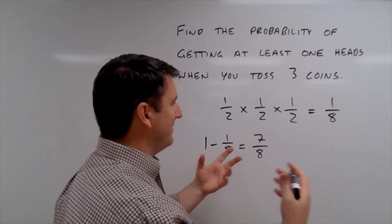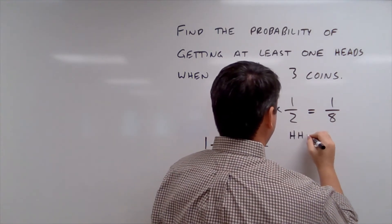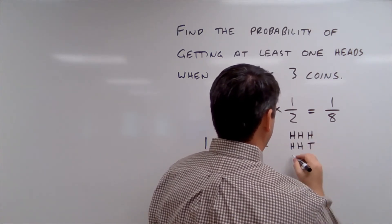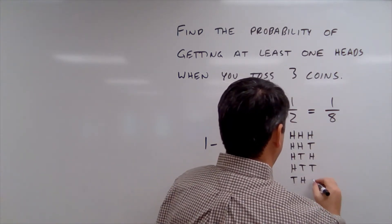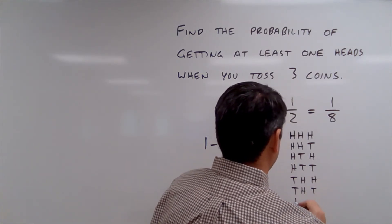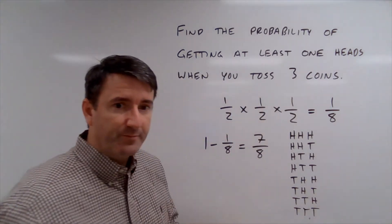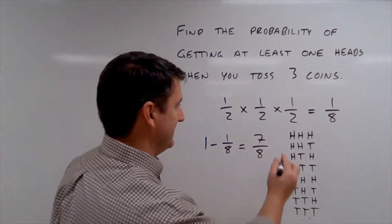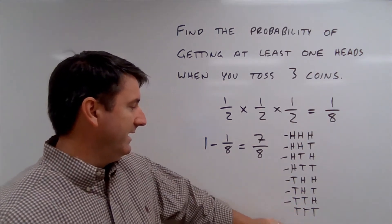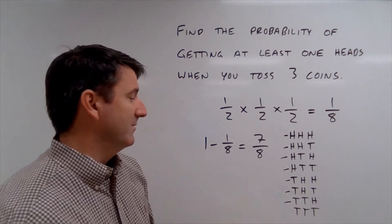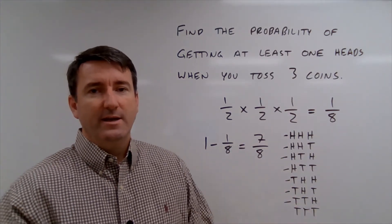This should make sense. If we think about all the possible outcomes when we toss three coins — HHH, HHT, HTH, HTT, THH, THT, TTH, TTT — there's at least one heads in seven of these. The only outcome that doesn't give us at least one heads is TTT. So seven out of the eight outcomes give us at least one heads, confirming our probability of seven eighths.